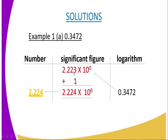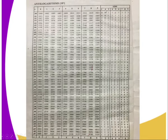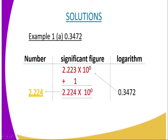Then you move to the difference column headed 2 — the third column. We are still on row 3.4. You move across to the column of 2 in the differences section and the answer there is 1. You are told to add, so you add that 1 to the last digit, giving you 2.224.